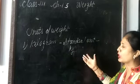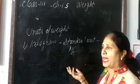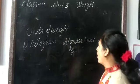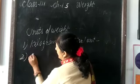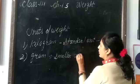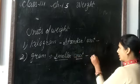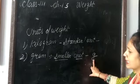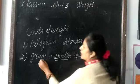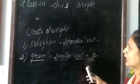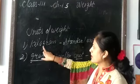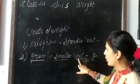If we want to measure the weight of a bag of rice, we measure in kilograms. Next unit is gram. Gram is the smaller unit of weight and is denoted by g. If we want to measure the weight of a few apples — one or two — we will measure in grams. Kilogram is the bigger unit of weight and gram is the smaller unit of weight.